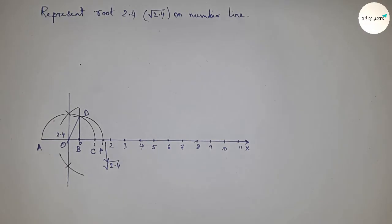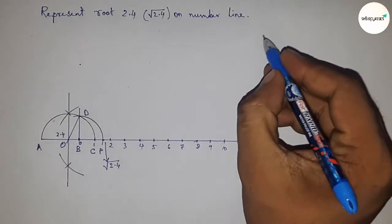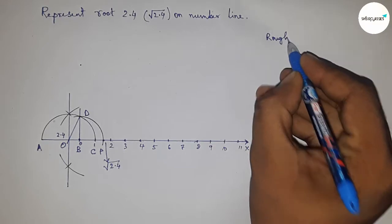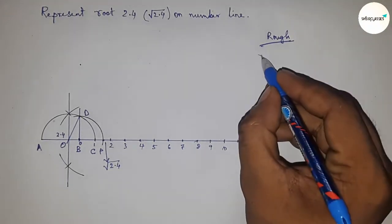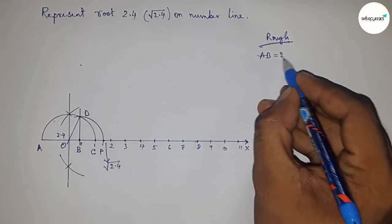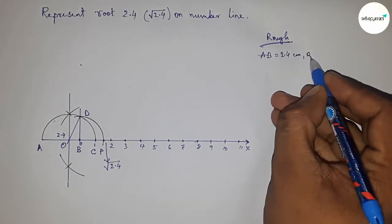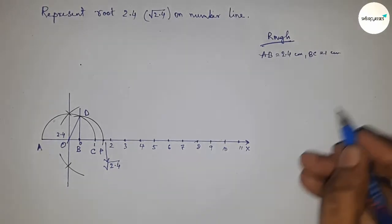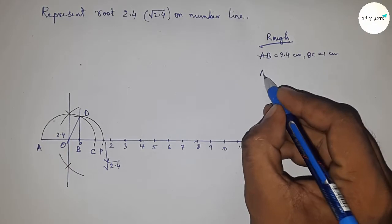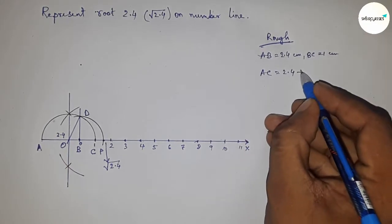Now let's discuss the calculation behind root 2.4. Given: AB equals 2.4 centimeters and BC equals 1 centimeter. Therefore, AC equals 2.4 plus 1, which is 3.4 centimeters.